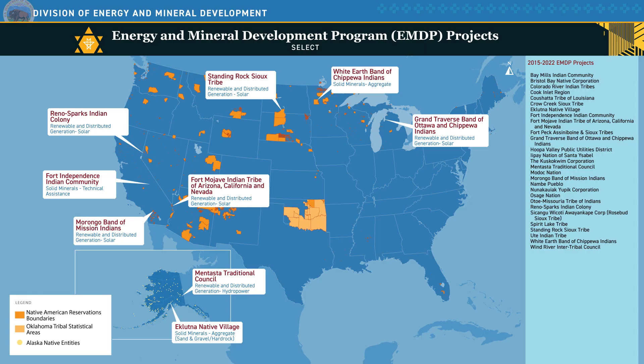Here is a quick view of EMDP projects funded since 2015. The map highlights a national footprint of diverse projects, including a solid minerals, aggregate, sand and gravel, and hard rock project with the Aklutna Native Village in Alaska; technical assistance in solid minerals for the Fort Independence Indian Community of Paiute Indians of the Fort Independence Reservation in California; and a renewable and distributed generation solar project with the Colorado River Indian Tribes in Arizona.